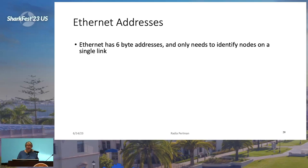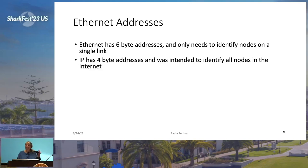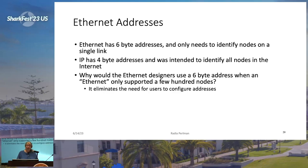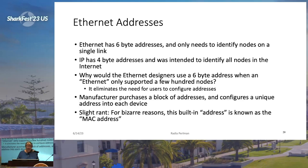Ethernet addresses — this is kind of weird. Ethernet has a six-byte address, but it only needs to identify nodes on a single link with only a few hundred nodes. Why would they choose a six-byte ID when IP had a four-byte address intended to hook together everything in the entire world? The reason is that it eliminates the need for users to configure addresses — the manufacturer builds equipment with a unique ID baked in, and they assumed six bytes would be enough. Why is this called an address? To me, an address is something that changes if you move, but your Ethernet address doesn't change if you move. It should be called an ID, not a MAC address.